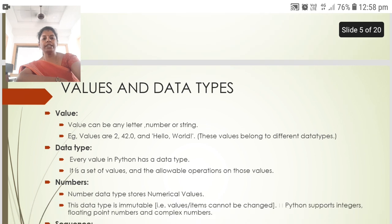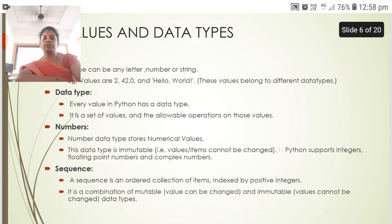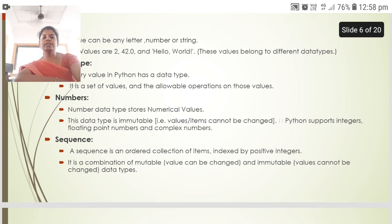Then next, values and data types. A value can be any letter, number or string. For example, 2, 4.2, hello or world. Data type: every value in Python has a data type. It is a set of values and the allowable operations on those values. Numbers: number data type stores numerical values. This data type is immutable. Sequence is an ordered collection of items indexed by positive integers, and it is the combination of mutable and immutable data types.